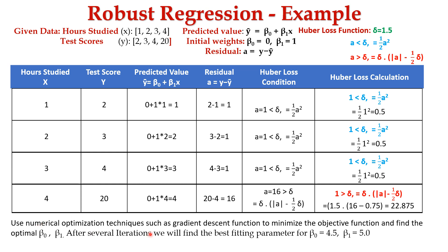Using numerical optimization techniques such as gradient descent to minimize the objective function, we find the optimal β₀ and β₁ values over several iterations. In this case, after several iterations, β₀ = 0.5 and β₁ = 5.0. So the Huber regression line is given as y = 0.5 + 5.0·x. Hope you are clear on this example problem.